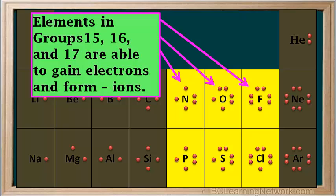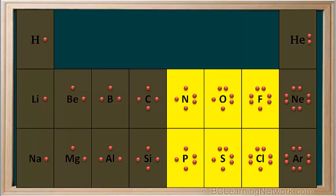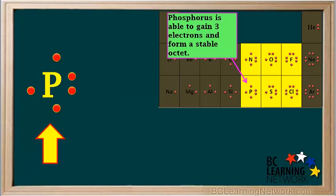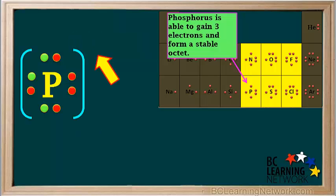Elements in groups 15, 16, and 17 are able to gain electrons and form negative ions or anions. Let's do phosphorus as an example. Phosphorus has three unpaired electrons. In order to achieve a stable octet, a phosphorus atom can readily gain three electrons. After gaining three electrons, phosphorus now has a stable octet and has become an ion. We draw square brackets around it, and because it gained three electrons, it has a charge of 3−, written on the top right outside the right bracket. This is the Lewis diagram for the P3−, or phosphide ion. This ion is stable because it has a stable octet like the noble gas argon.